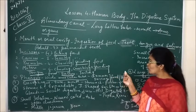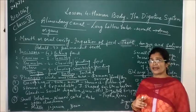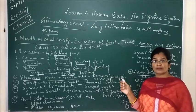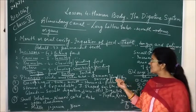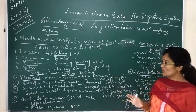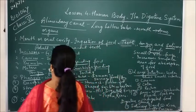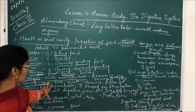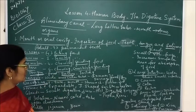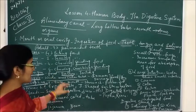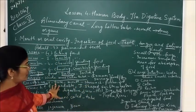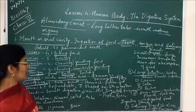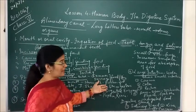Food and air both pass through the pharynx, but when food passes through the pharynx into the esophagus, the passage for air closes. And when air passes, the passage for food closes, so that both do not mix together. The third organ is the esophagus, which is a tubular structure. It starts from the mouth and ends up at the stomach, and its main function is to transport food from the mouth to the stomach — it pushes the food into our stomach.